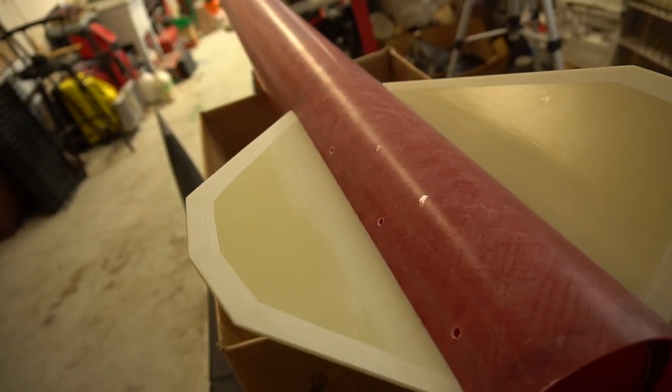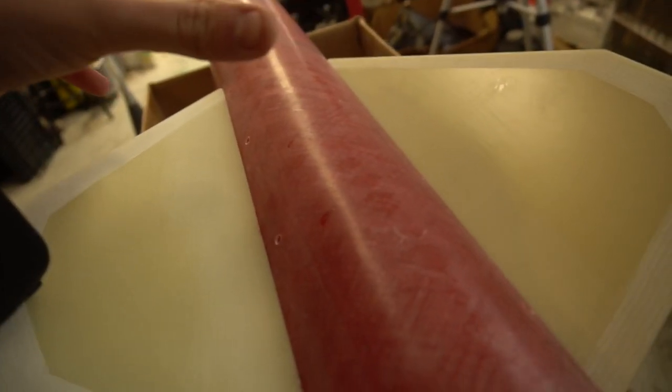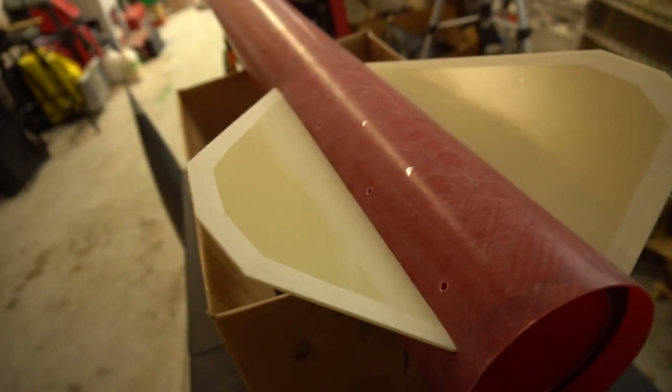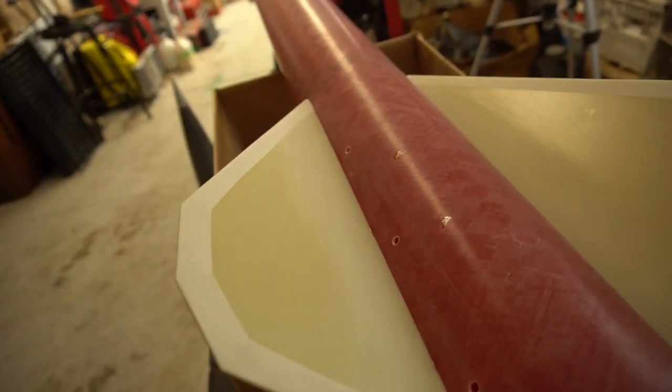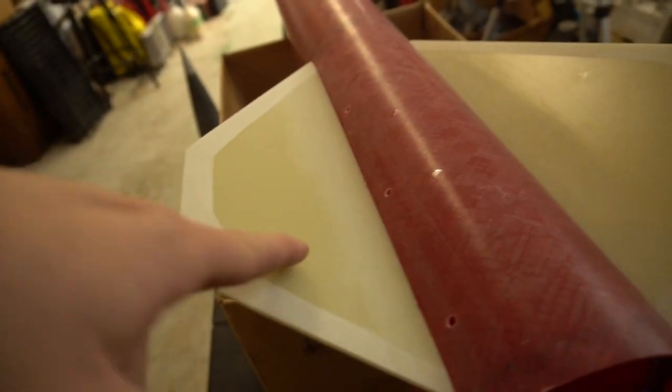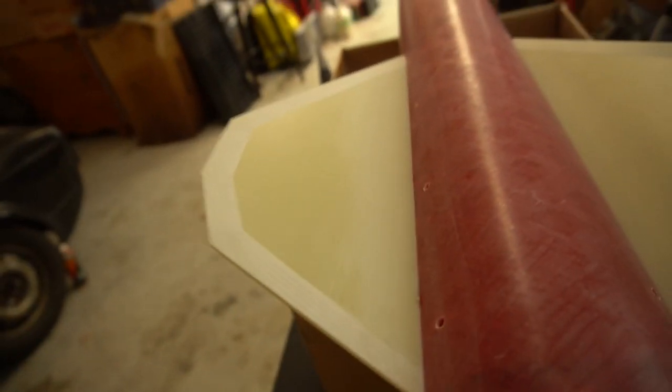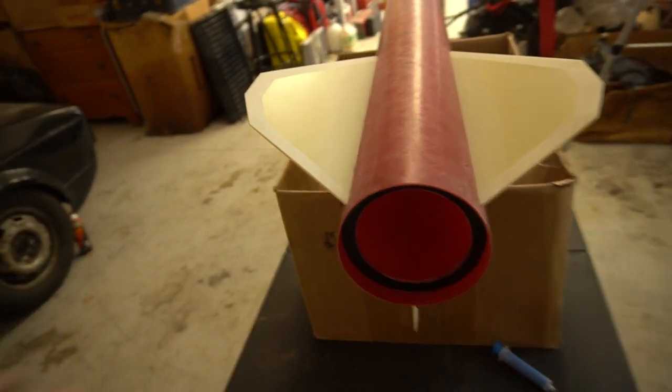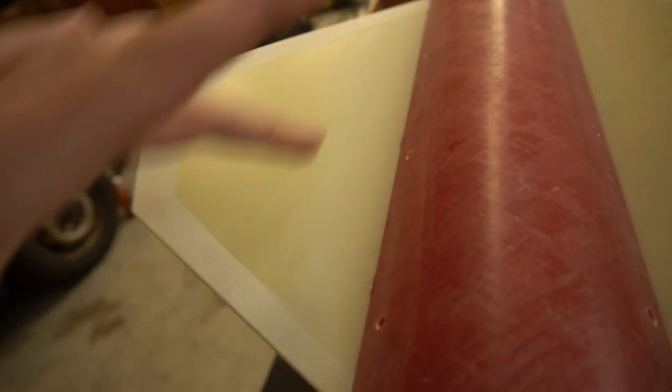So effectively, we're making this all one big unit. So the joints with the motor tube to the centering ring with CA and the fins to the motor tube with CA are going to be overruled by the fact that epoxy is going to be attaching everything.